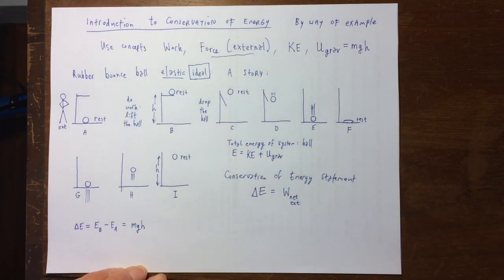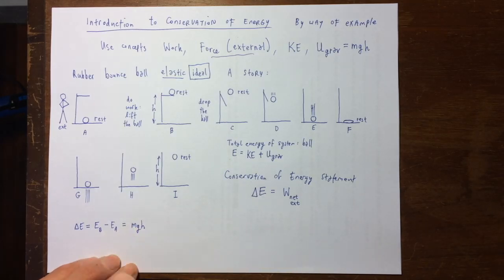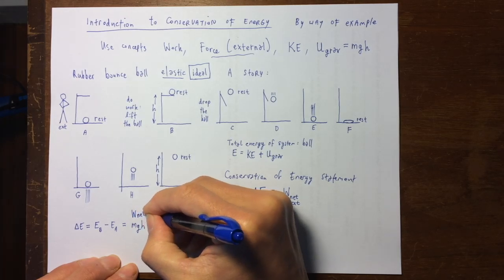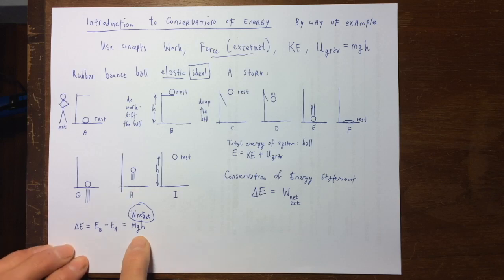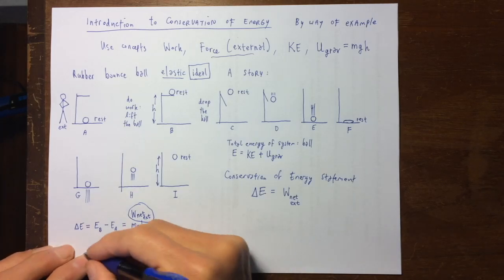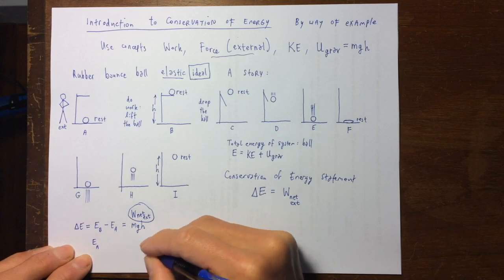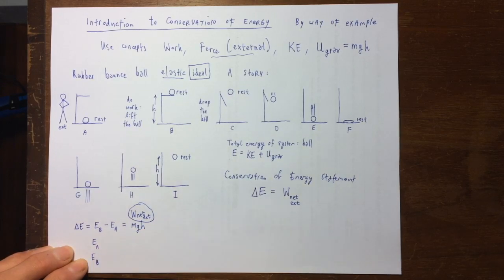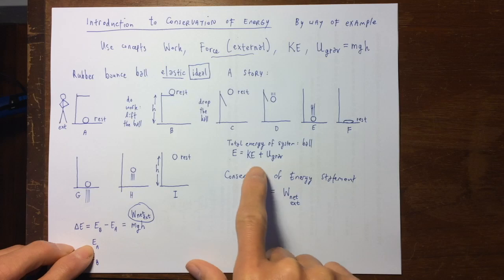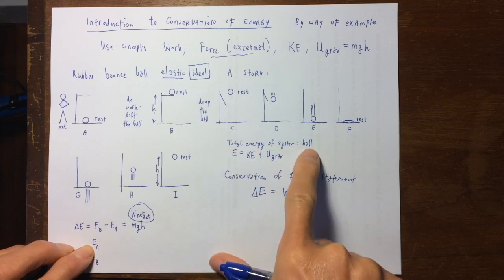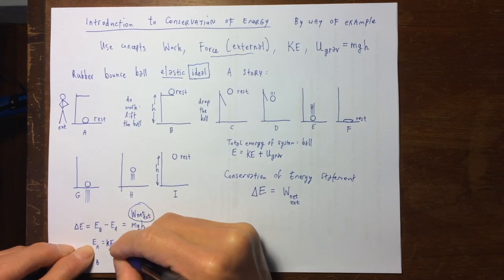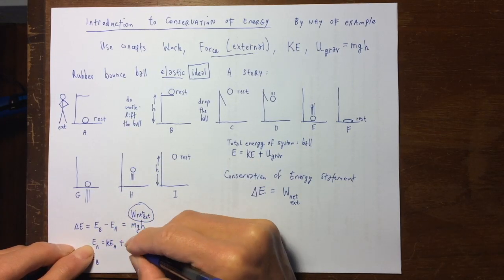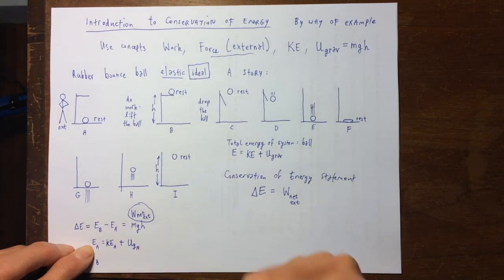It's just the change in the gravitational potential energy. This term is the work done by the net external force. So let's look at EA and EB. The total energy of the ball system at A is the kinetic energy at A plus the gravitational potential energy at A.